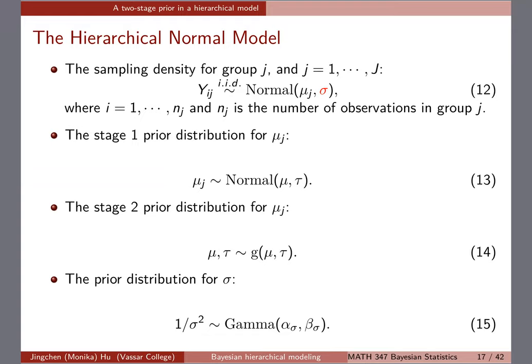Also, don't forget sigma. Sigma is still random even though we assume it's commonly shared, so you should put a prior on it as well. For simplicity, we're going to use a conjugate prior — 1 over sigma squared follows a gamma distribution. I use the subscripts alpha_sigma and beta_sigma to indicate the parameters of the gamma prior for sigma, to differentiate it from the other gamma prior. That makes sense overall.